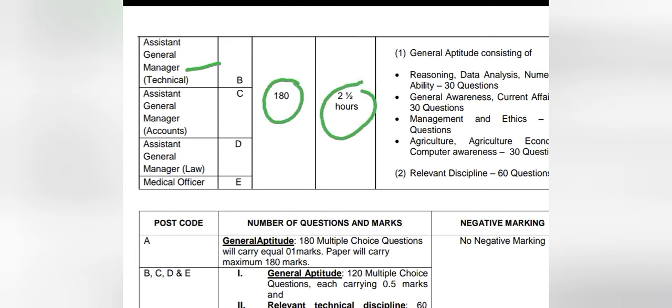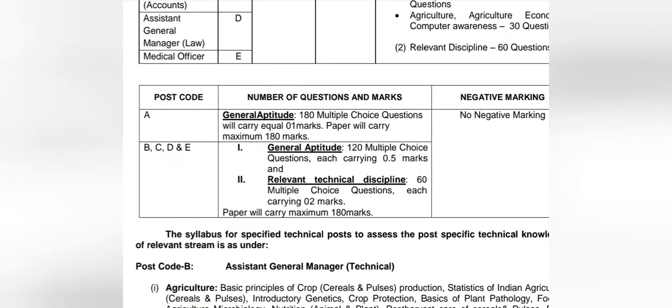For AGM Technical, there will also be one exam lasting two and a half hours, divided into two sections: a General Aptitude section and a Relevant Discipline section. The General Aptitude section covers reasoning, data analysis, general awareness, current affairs, management ethics, and agriculture and economy sector questions. The remaining 60 questions will be from the relevant discipline.